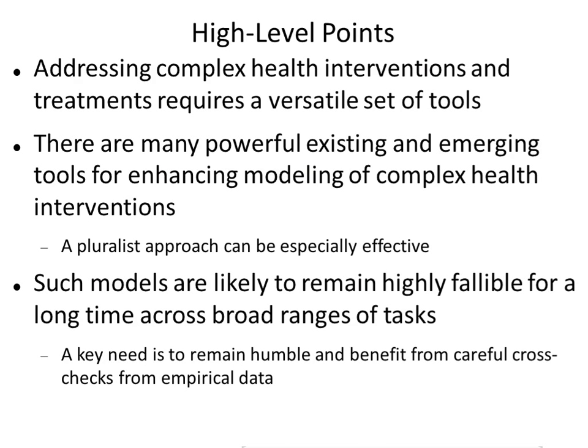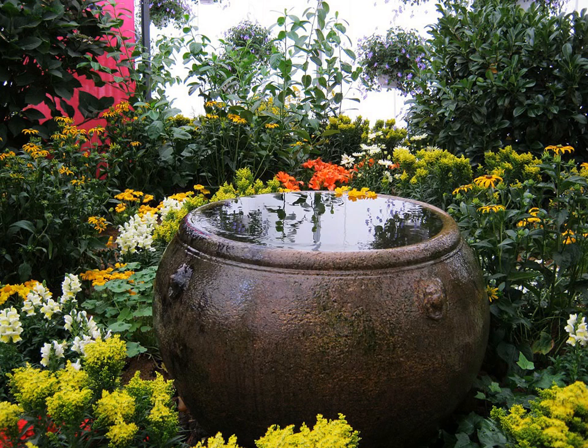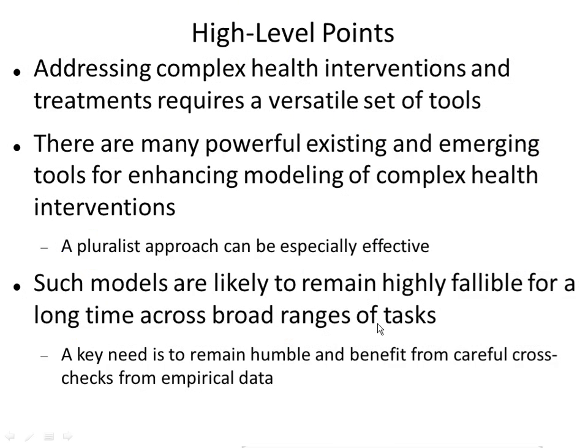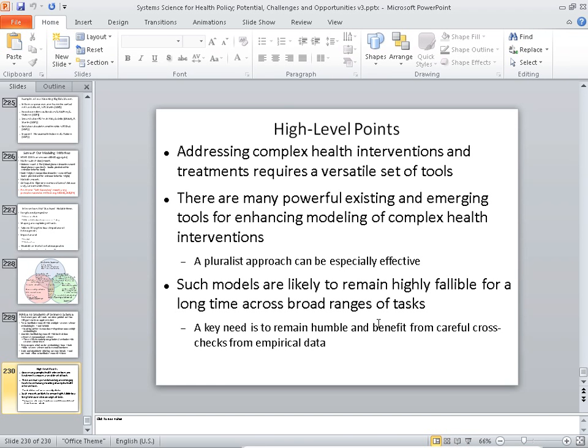A key need is to remain humble about the models — they're capturing our best understanding, our best guesses for what's going on — and to cross-link them richly with empirical data when the goal of the model is to speak to a particular context. There are other uses of models that are much more stylized, seeking to communicate a few essential truths and not so tied with data — more to think through the implications of assumptions. But when you have a model that aspires to be empirically grounded and to speak to a particular context, keeping it tied in on an ongoing way with data is very important. Starting tomorrow, we'll be seeing lots of particular models, and you'll get hands-on interaction with those models.